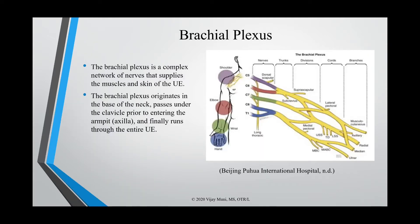The brachial plexus is a complex network of nerves which supplies our muscles and skin to the upper extremity. This means that our body gets sensory and muscular innervation through the brachial plexus, which is how we're able to have sensory input and motor output through our upper extremity.